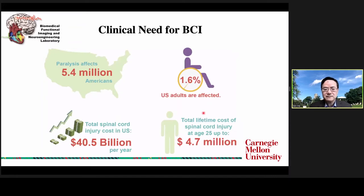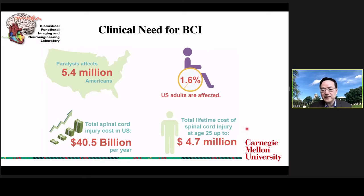Now let's come back to the societal need for BCI. In the United States alone, we have more than 5 million people who are paralyzed. Taking spinal cord injury as one major cause, it costs our nation more than $40 billion per year. At the individual level, a spinal cord injury patient at age 25 is going to cost almost close to $5 million throughout their lifetime. This is a truly huge public health burden to our society.